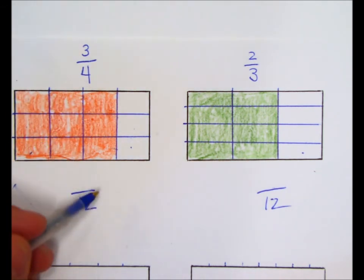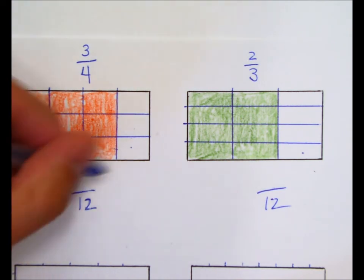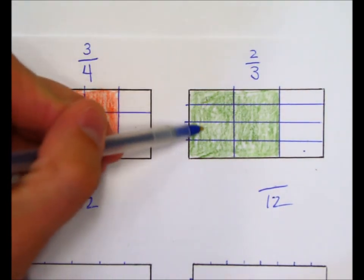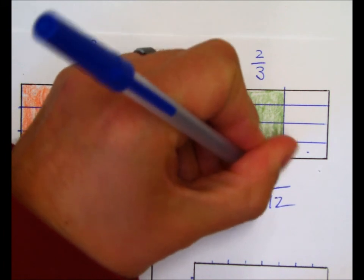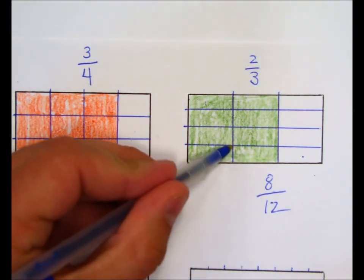We have 12 equally sized pieces here, and now we can count. We have 1, 2, 3, 4, 5, 6, 7, 8, 9 out of the 12 that are colored. In this one, we have 1, 2, 3, 4, 5, 6, 7, 8 that are colored. So now we can say, I've got 9/12 here. Here I've got 8/12.